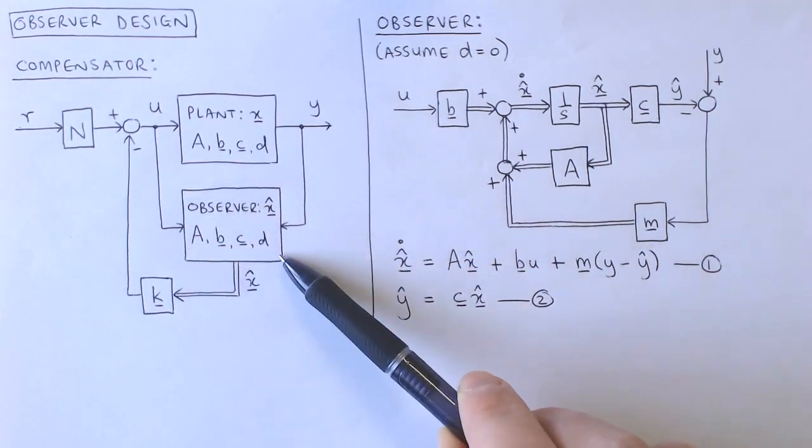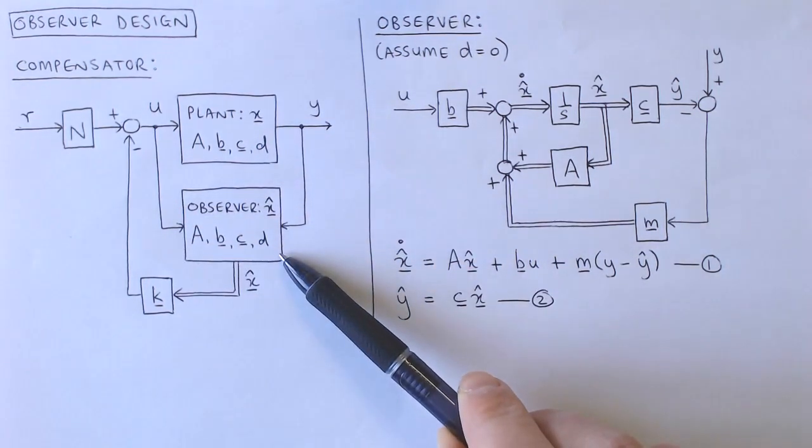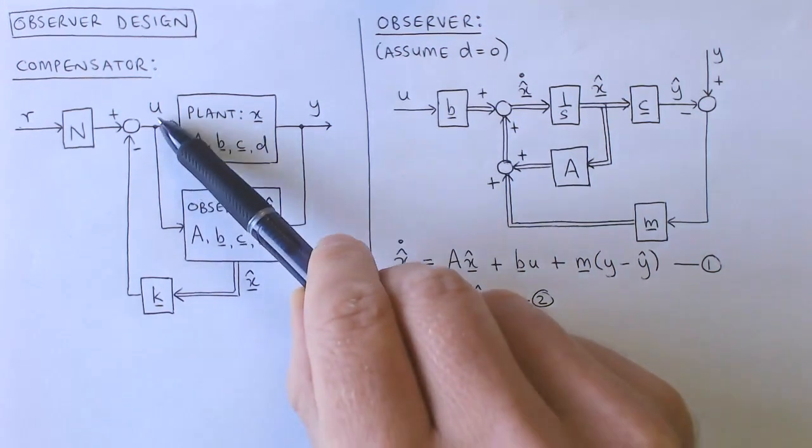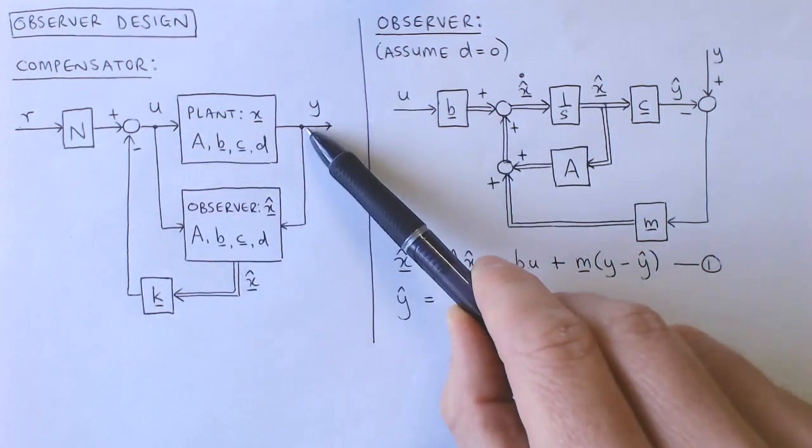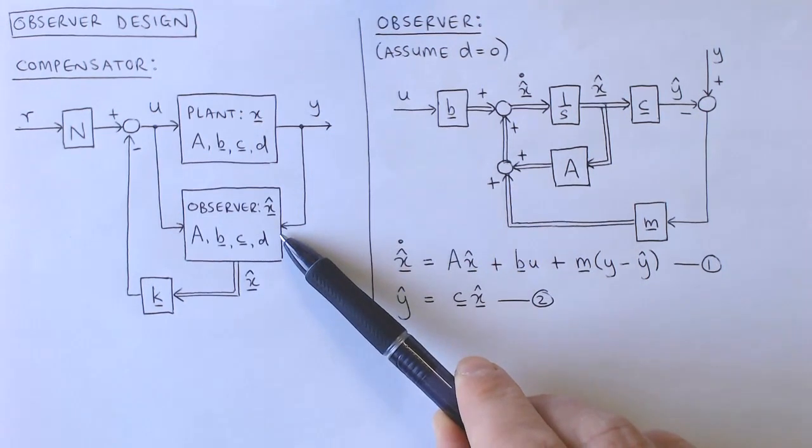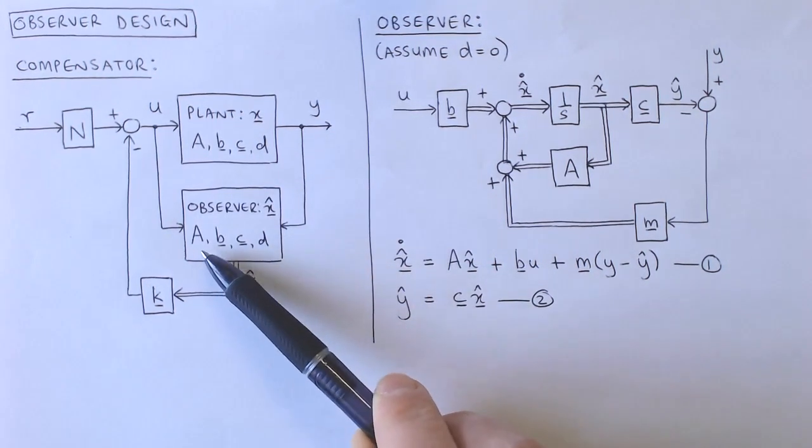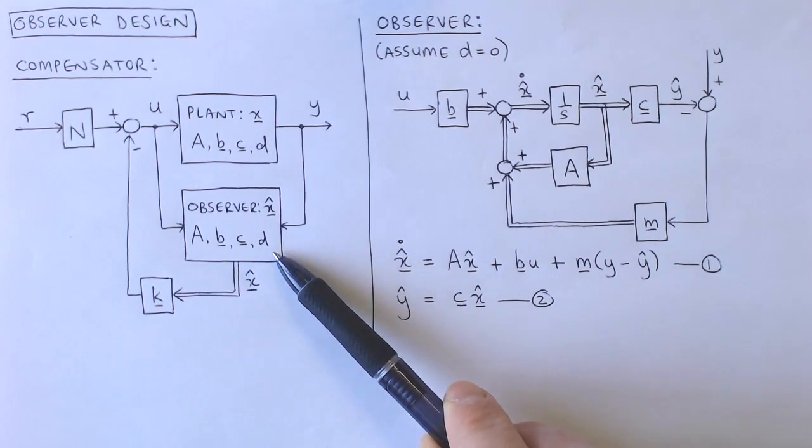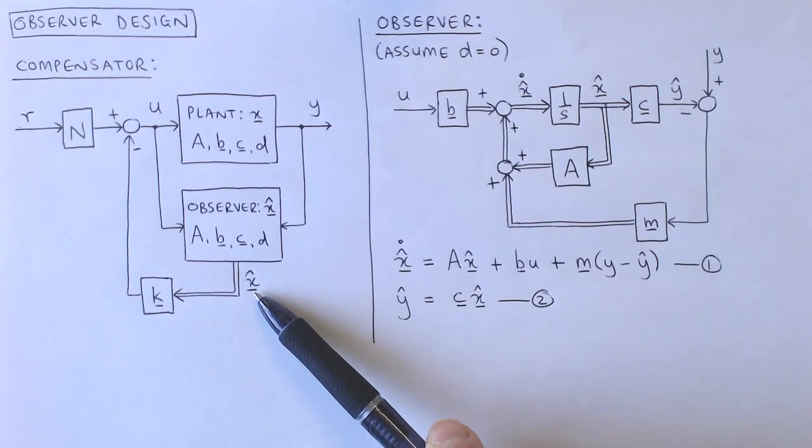The task of the state observer is to reconstruct the states as accurately as possible, given the information available to us. This information includes the plant input, the plant output Y, and the plant model described by the system matrices A, B, C, and D. The reconstructed or estimated states are called X hat.